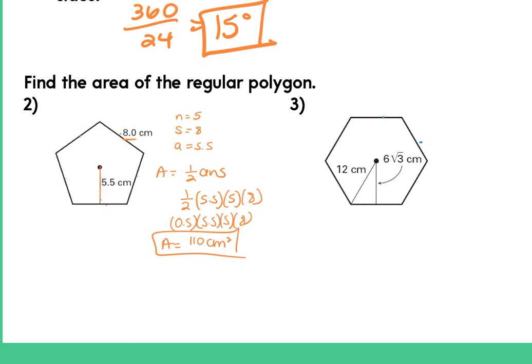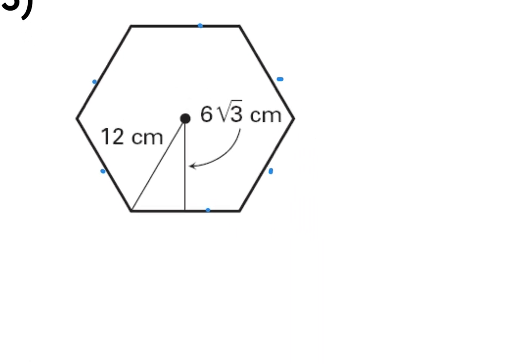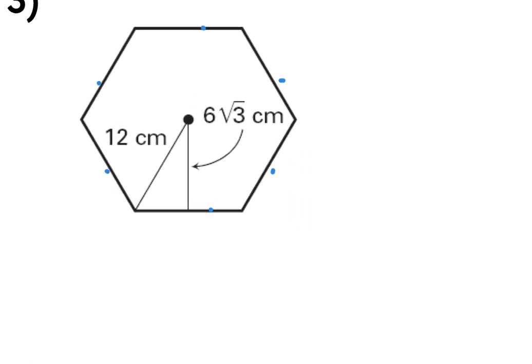Number 3 has 6 sides, so this is actually one of those cases where it didn't need to give you both measurements because you can use your special right triangles. The number of sides is 6. They give you the radius, which is 12, and they give you the apothem, which is 6√3.